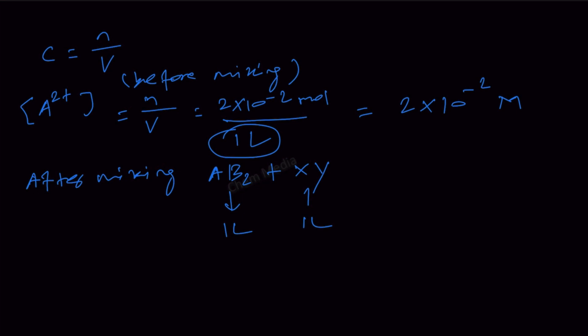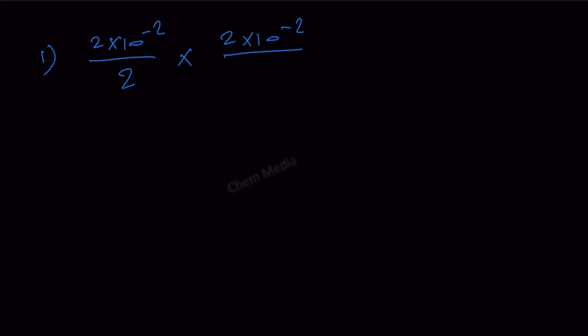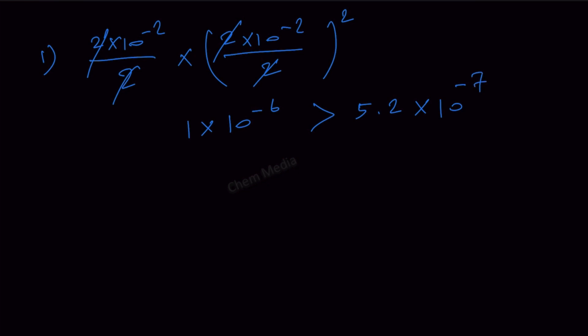That's the key part in this question. Let's check option 1: (2 × 10⁻²)/2 × [(2 × 10⁻²)/2]² = 10⁻² × (10⁻²)² = 10⁻⁶. Since 10⁻⁶ is greater than 5.2 × 10⁻⁷ (the Ksp value), a precipitate will occur. Let's check the other options.